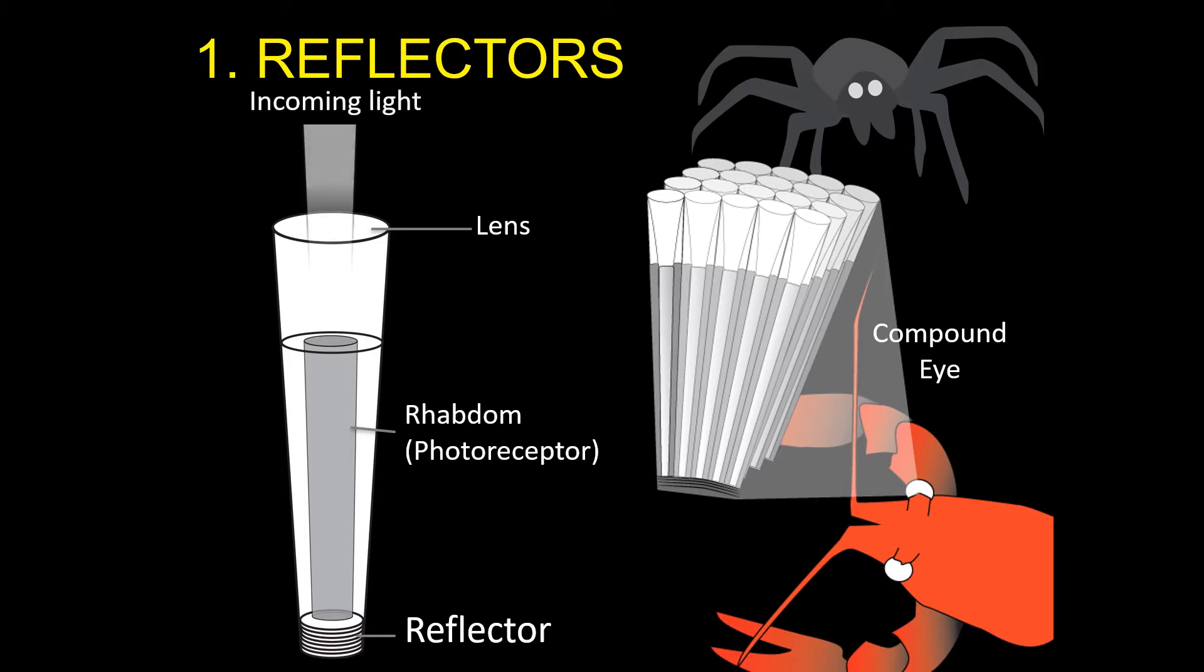If we look at just one unit of a crustacean compound eye, we see that light enters through the lens and passes through the light-sensitive photoreceptor, or rhabdom. When it hits the reflector at the back of the eye, a second dose of photons are reflected back onto the rhabdom, increasing the sensitivity of the eye and improving vision in the dark.